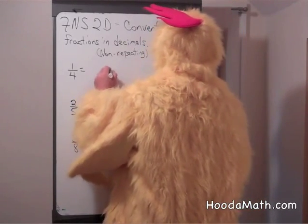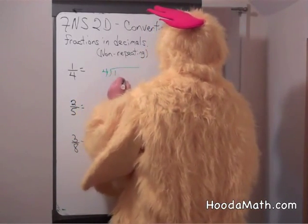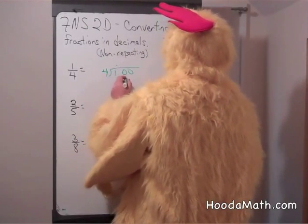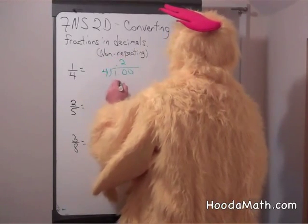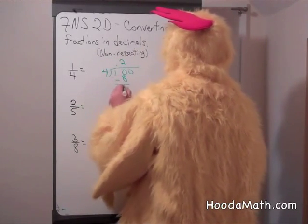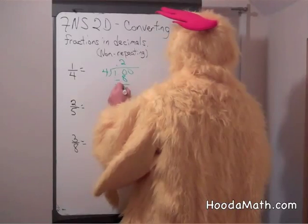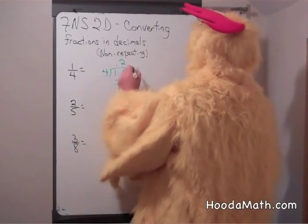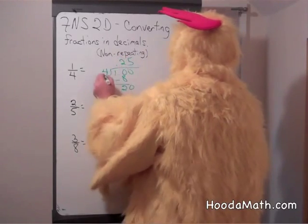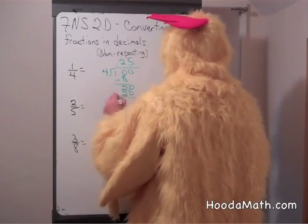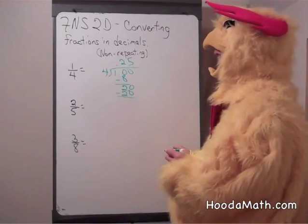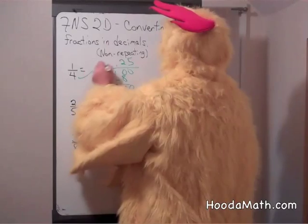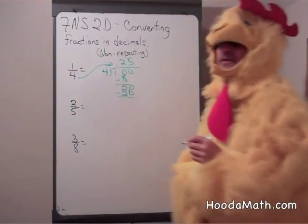Four into one. Four divided into ten twice. Two times four is eight. Subtract. Bring down the zero. Four into twenty goes five times. Five times four is twenty. We have a remainder of zero. So one-fourth has an equivalent decimal of twenty-five hundredths.